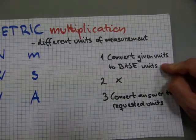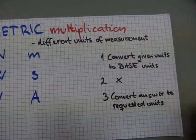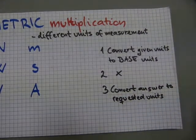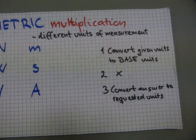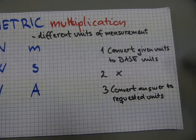You need to convert the given units to base units, you need to do the multiplication itself, and you need one more conversion to be done, convert the answer to requested units.